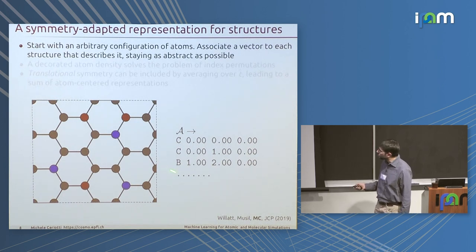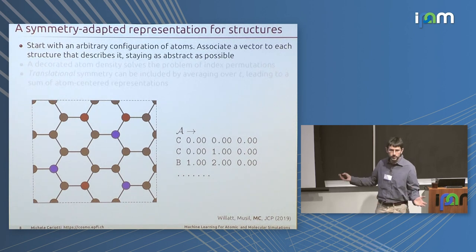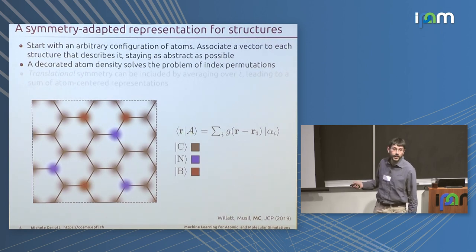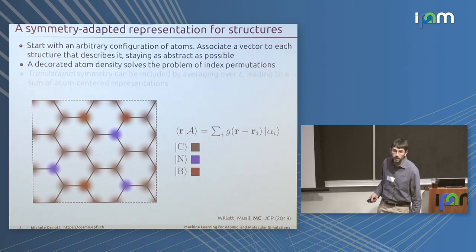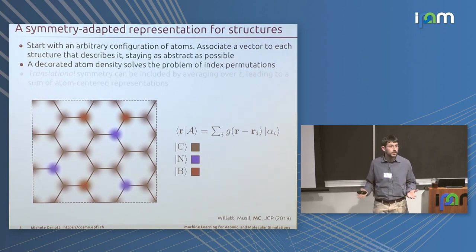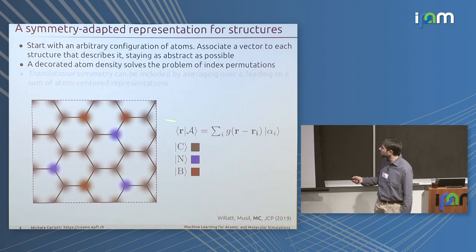I start with the vector of Cartesian coordinates — the worst possible starting point — but then represent the structure, for instance a graphene sheet, with a vector essentially like an atom density, placing a Gaussian on each atom and decorating it with an abstract vector indicating whether at a certain position I have carbon, nitrogen, or boron. This is effectively a separate density for each species. This object is naturally invariant under permutation of atom labels, but it is not translational invariant.